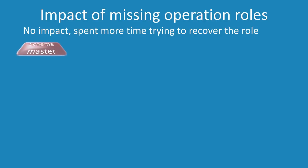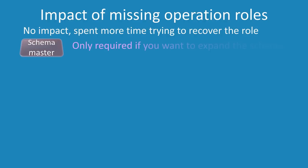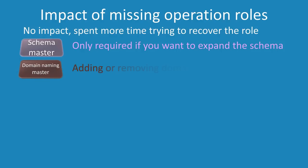First you have the schema master. If you are not planning on making any changes to the schema, this role can be offline indefinitely. The next operational master role, domain naming master, is only required if adding or removing domains. If you are not adding or removing domains, this operational master role can be offline indefinitely.